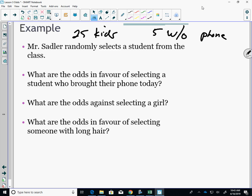What are the odds in favor of selecting a student who brought their phone today? First of all, you have to think. How many people have a phone? If there's five without, that means there's 20 of them. 20 with phones. So favorable outcomes would be picking someone with a phone. So that would be 20 to 5. It's not probability. The probability would be 20 out of 25. But the odds is favorable to unfavorable. So it would be 20 to 5, or you could reduce that to 4 to 1.